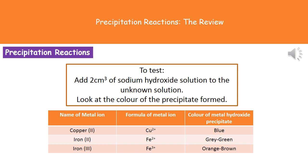There are three colors that we have to remember for our exam. Copper, which is a blue color precipitate. Iron(II), which is a gray-green color precipitate. And iron(III), which is an orangey-brown precipitate. So you've got to remember those three colors, so make sure that you do sit and learn them.